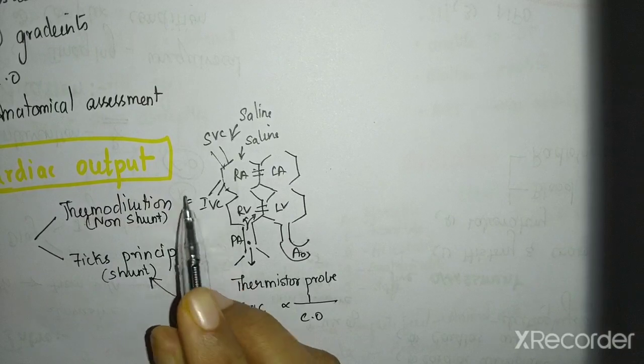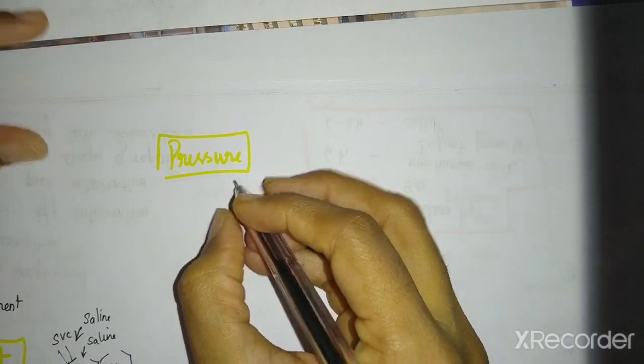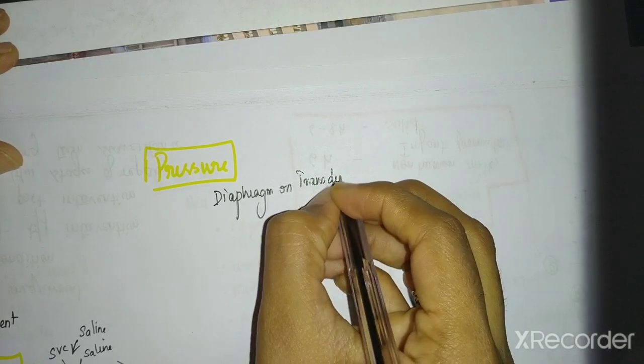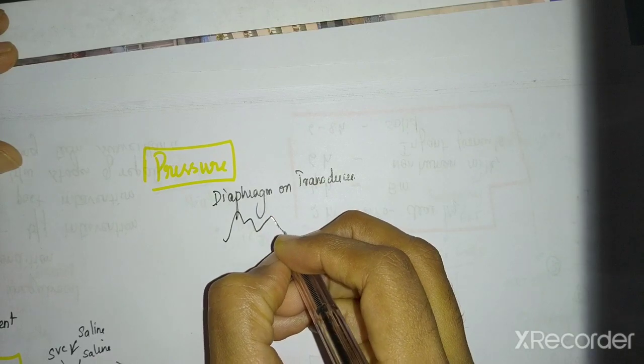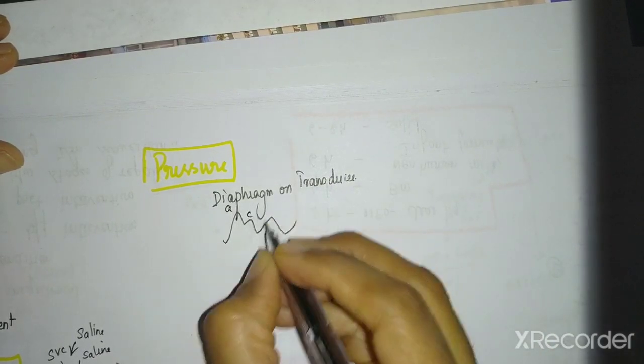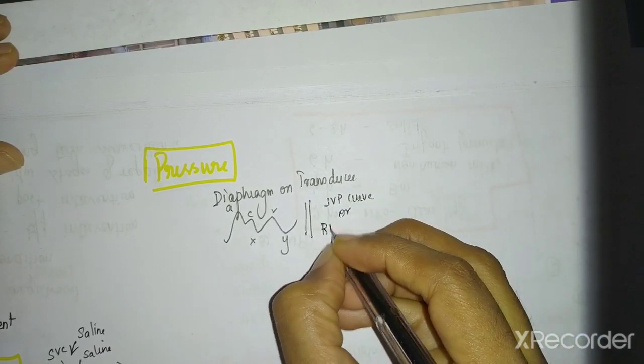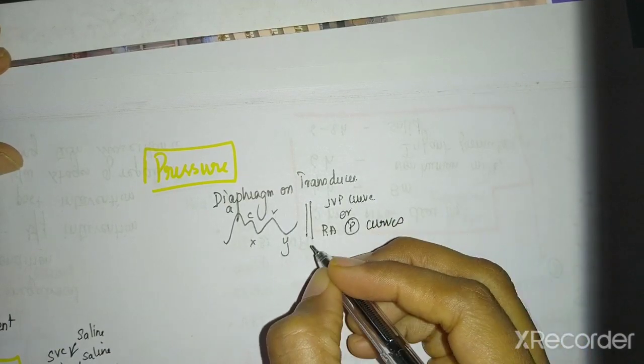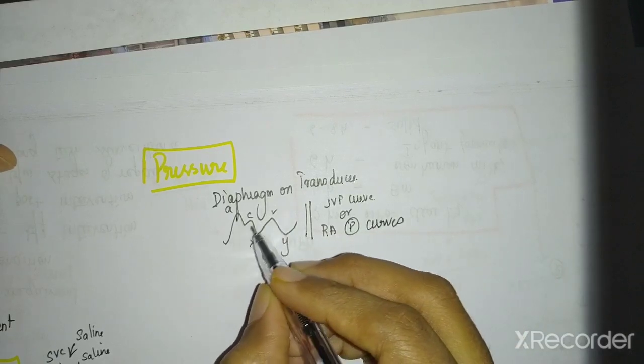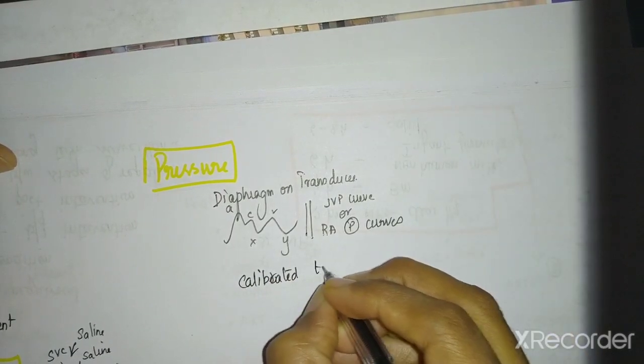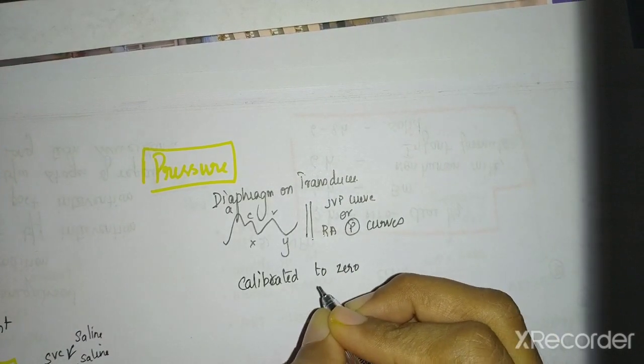So now that we have calculated the cardiac output, we can next calculate pressures. So just like we had a thermistor probe in cardiac output, in pressure you have a diaphragm on the transducer. So this diaphragm will measure the change in pressure and it will produce a curve. I think all of you will remember this. A, C, V, X, Y. This is looking very similar to something. This is JVP curve or to be more accurate, right atrial pressure curves. So the catheter tip placed there will measure the pressures and it will produce in a graphical format, in a waveform. The system will be calibrated to 0 before the procedure. So that any change in pressure will be measured. This is another use of diagnostic catheterization.